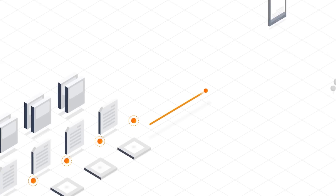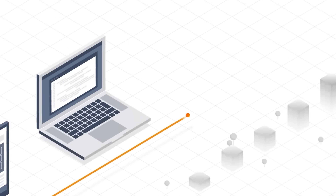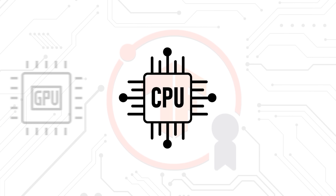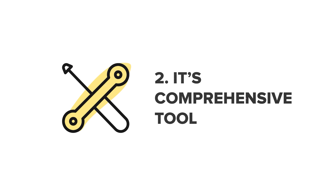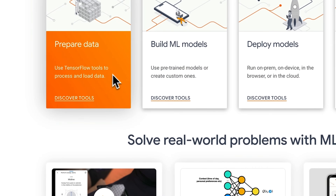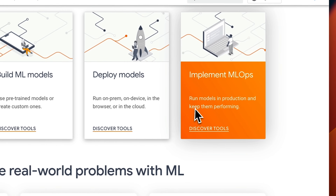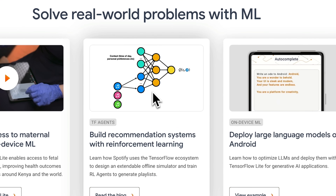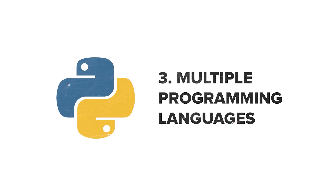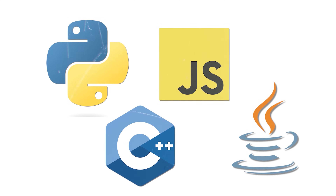TensorFlow. Starting with the advantages: Various platform support — it naturally works on various platforms like regular computers, graphic cards, and special-purpose hardware. It's a comprehensive tool — TensorFlow has grown into an all-in-one machine learning toolkit with tools for every step of a machine learning project, from setting things up to deploying and using the models. It also supports multiple programming languages — Python, JavaScript, C++, and Java, with experimental versions for Go and Swift.